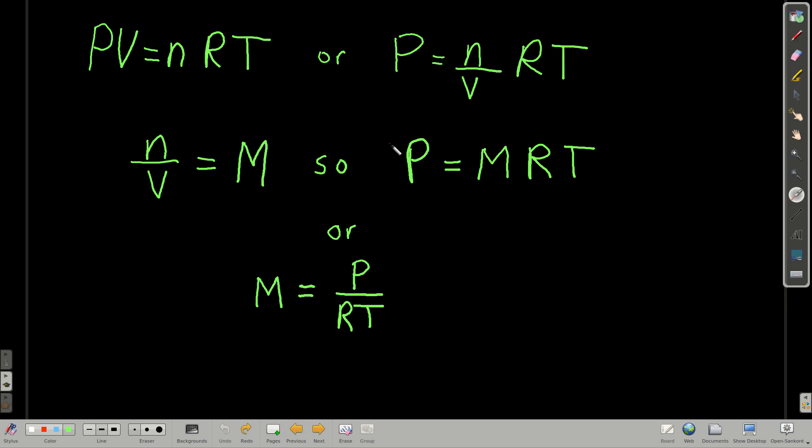But n is moles and V is the volume in liters. Well, moles over liters is just the molarity of, in this case, the gas. So we could say that the pressure of a gas is equal to the molarity times RT, or the molarity is equal to the pressure over RT.